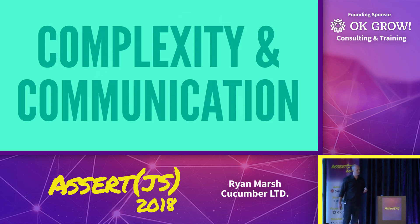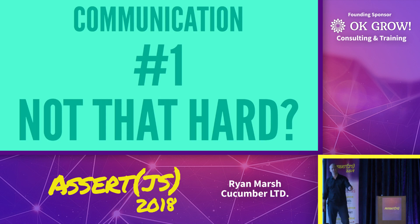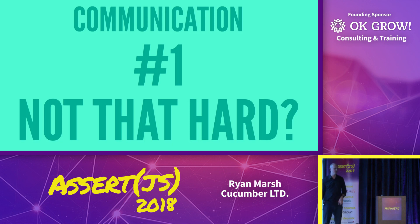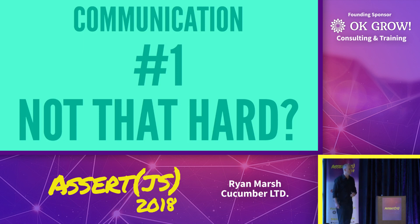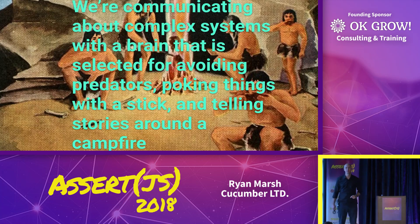Complexity and communication. Communication is basically the number one thing. When I talk to teams, the number one thing they mention in terms of the success of a project is good communication, or in the failure of a project, bad communication. But what's interesting is that communication is not that hard — does anybody not understand what I'm saying right now? The reason we struggle with communication on a project is that we're communicating about complex systems with a brain that was selected for avoiding predators, poking things with a stick, and telling stories around a campfire.